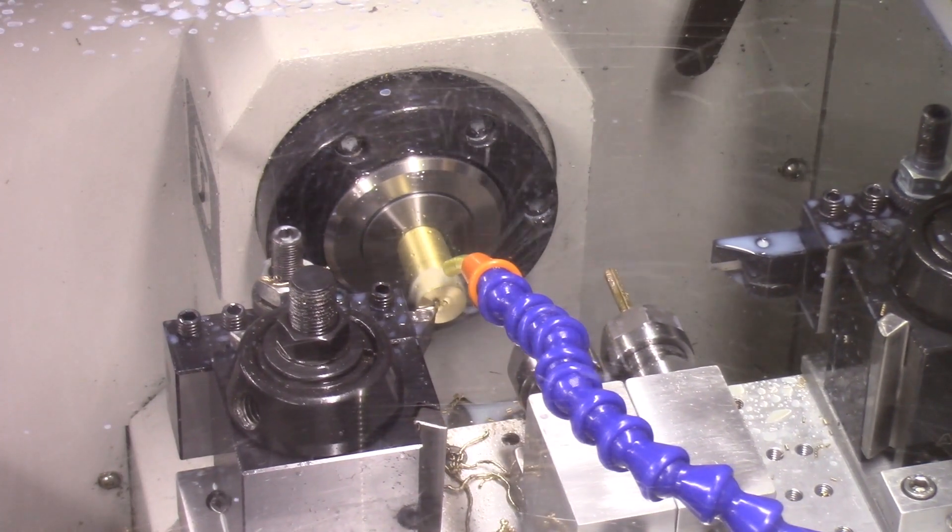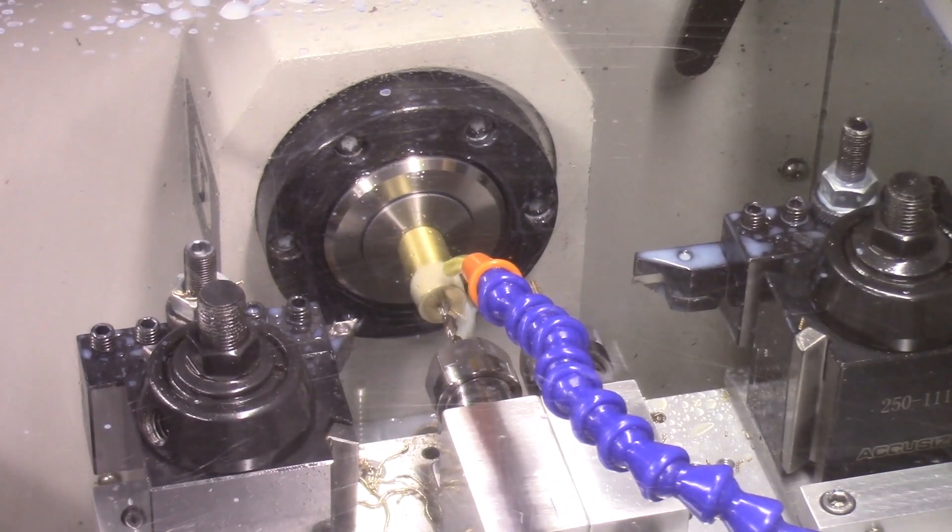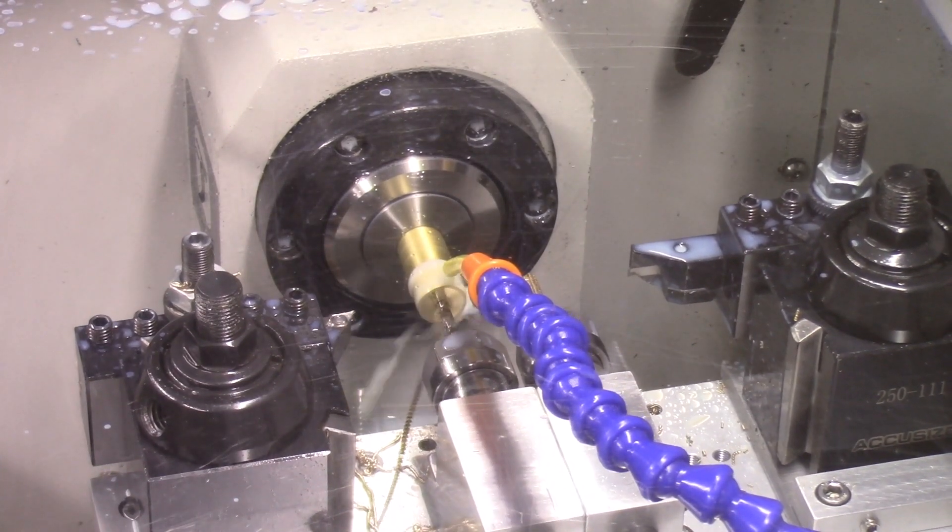Next I'm using the number 19 drill to drill the center hole in the brass bar. And I'm using pecking motion to drill this hole.